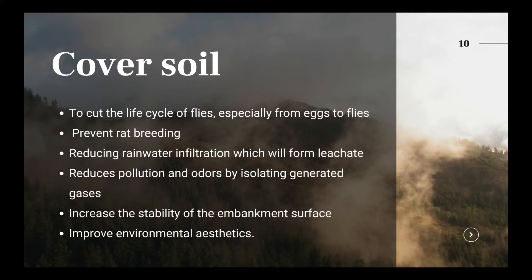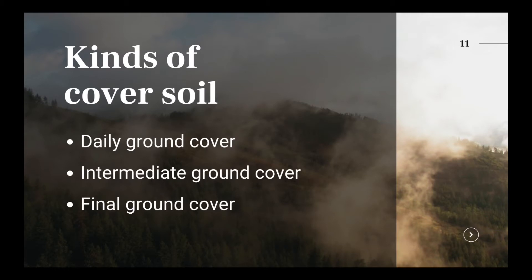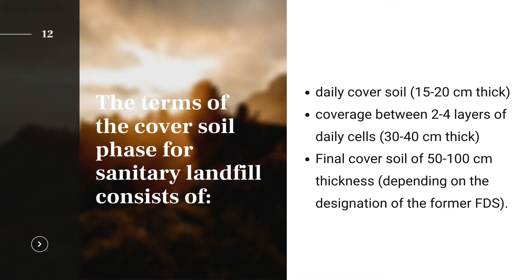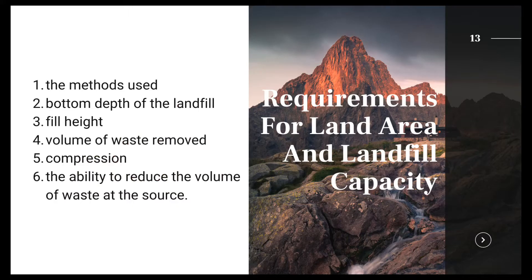Soil closure also helps improve environmental aesthetics. The kinds of cover soil are daily ground cover, intermediate ground cover, and final ground cover. For the sanitary landfill, the daily cover soil phase covers between 2 to 4 layers of daily cells, while the final cover soil is 50 to 100 cm in thickness.